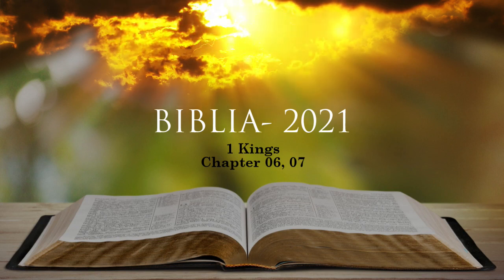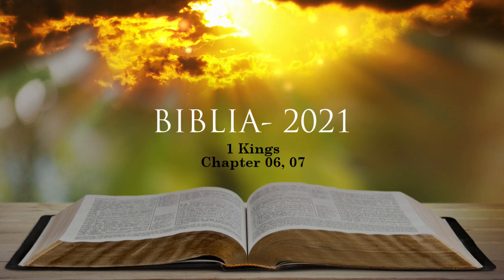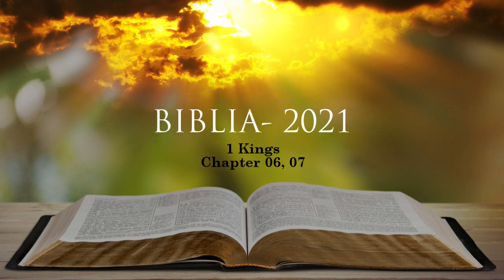He also made the pots and shovels and sprinkling bowls. So Huram finished all the work he had undertaken for King Solomon in the temple of the Lord: the two pillars, the two bowl-shaped capitals on top of the pillars, the two sets of network decorating the two bowl-shaped capitals on top of the pillars, the four hundred pomegranates for the two sets of network, two rows of pomegranates for each network, the ten stands with their ten basins, the sea and the twelve bulls under it, the pots, shovels and sprinkling bowls. All these objects that Huram made for King Solomon for the temple of the Lord were of burnished bronze. The king had them cast in clay molds in the plain of the Jordan between Sukkoth and Zarethan. Solomon left all these things unweighed because there were so many; the weight of the bronze was not determined.